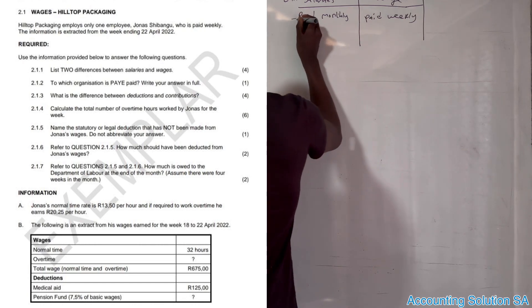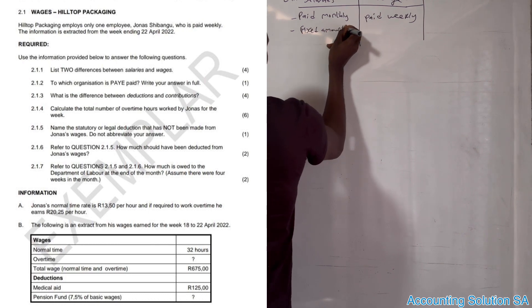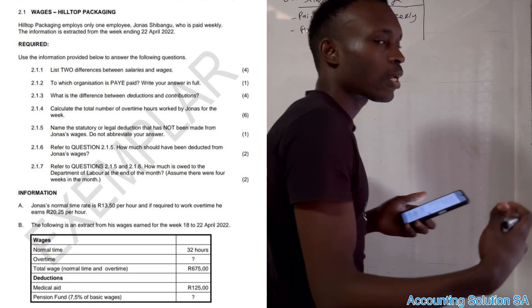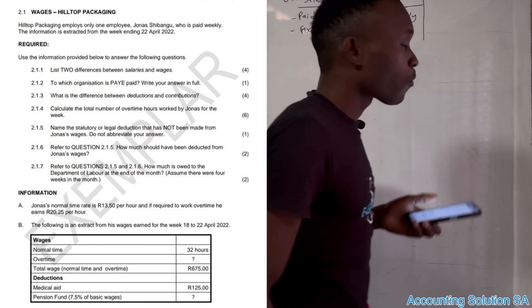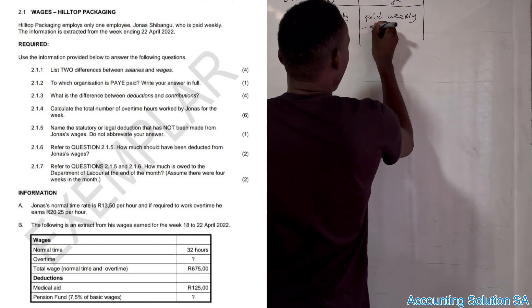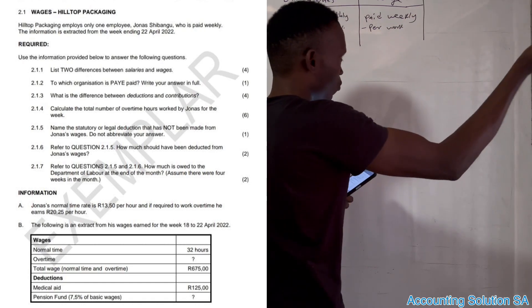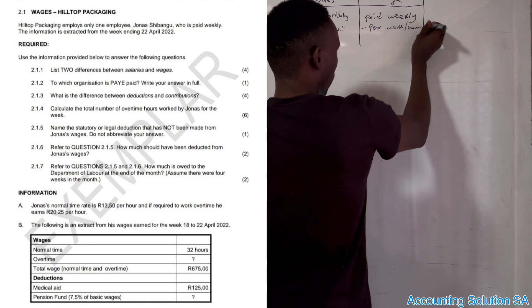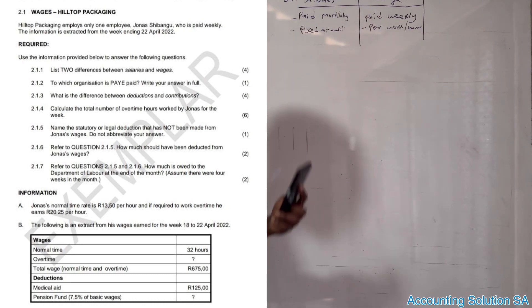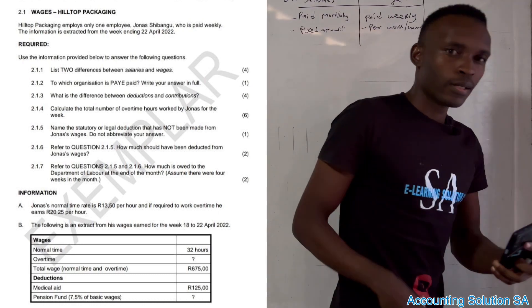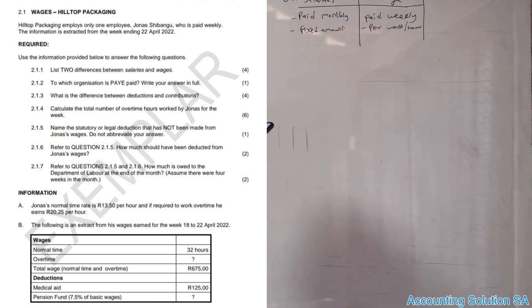The second difference: under salary you are paid a fixed amount. If your salary is R10,000 it's going to be R10,000 every month. But with wages, you are paid per hour worked — if you don't work, you are not paid. The salary remains the same while wages depend on how many hours you have worked.